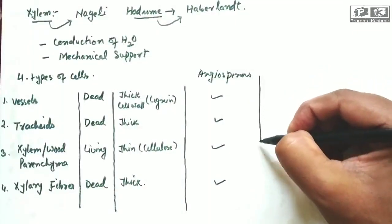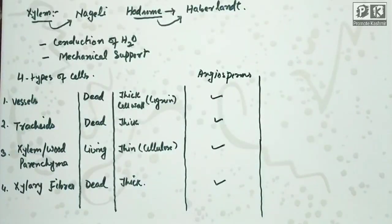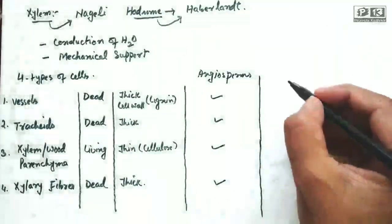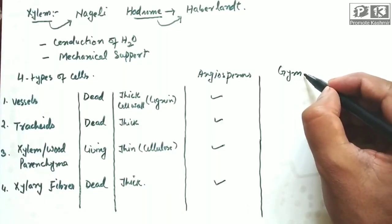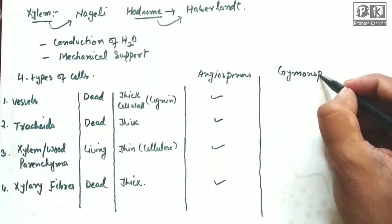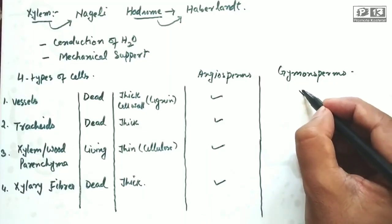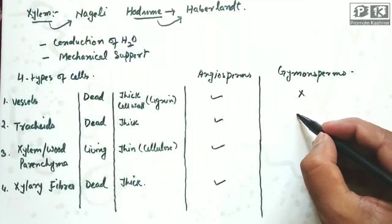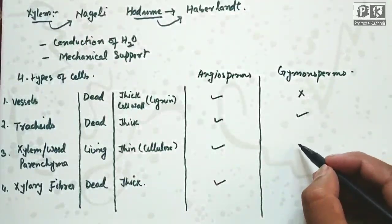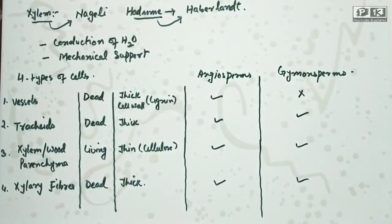The next group is gymnosperms. In gymnosperms, vessels are absent. Tracheids are present, xylem parenchyma is present, and xylem fibers are present.